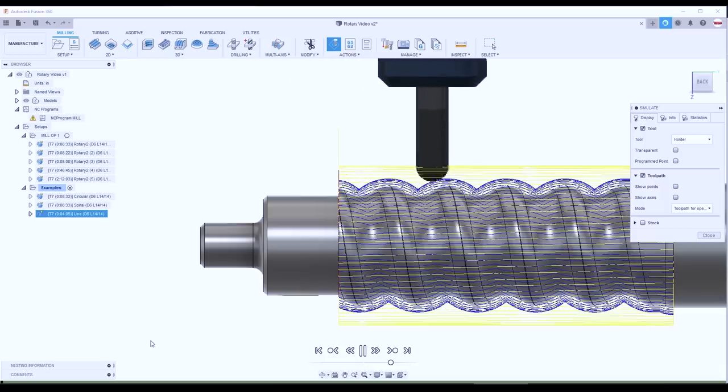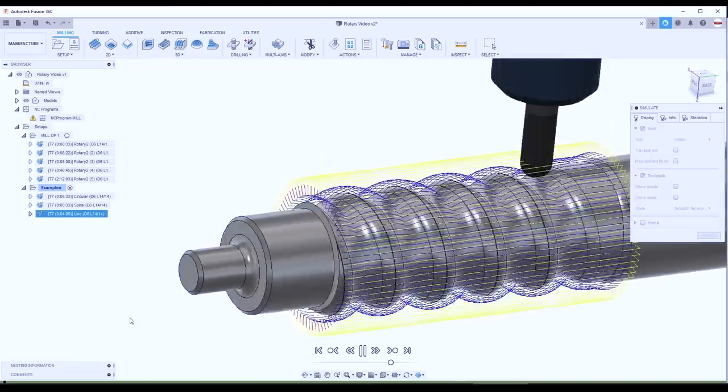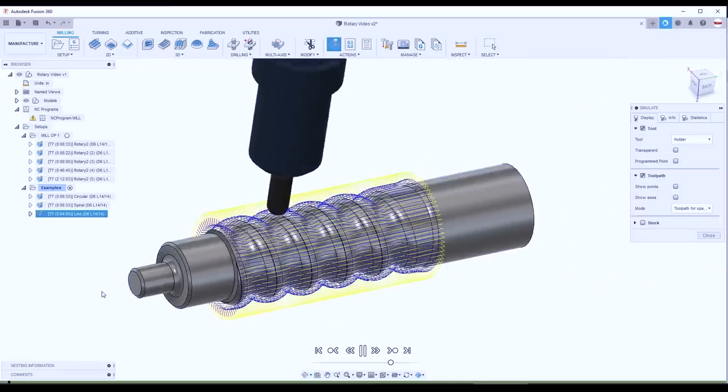Hi folks, Fusion 360 fourth axis. Let's walk through how we use the rotary toolpath to machine this part on the Tormach MicroArc fourth axis.